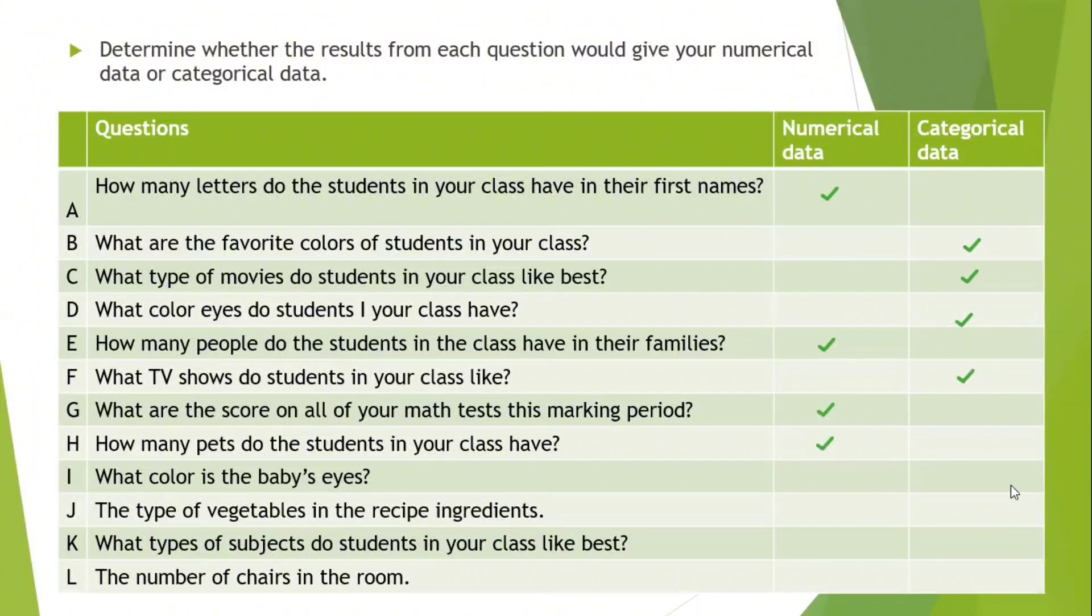J, the type of vegetables in the recipe ingredients. Maybe tomato, maybe carrot, maybe any type of vegetables. So this is categorical. K, what types of subjects do students in the class like the best? The preferred subject. Mathematics or science or Arabic. So this is categorical, not numerical. L, the number of chairs in the room. This is numerical.